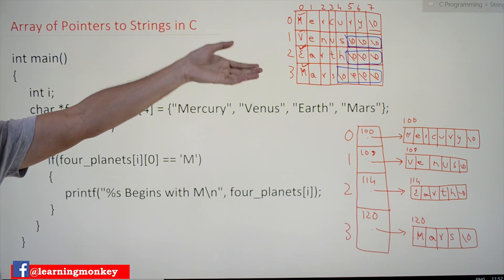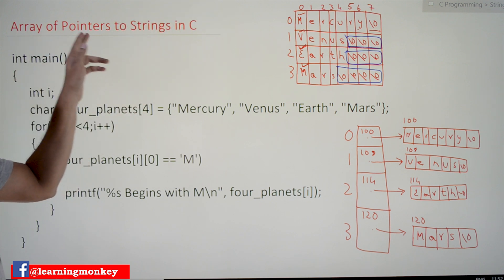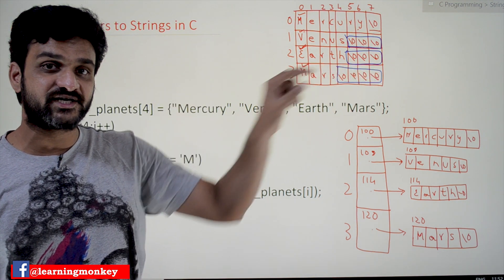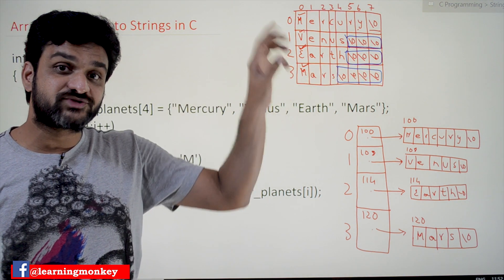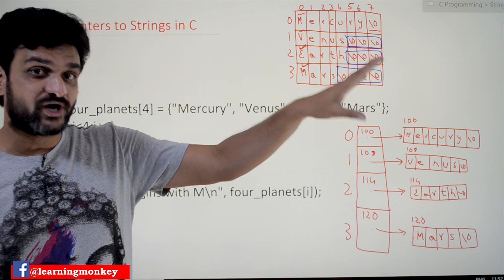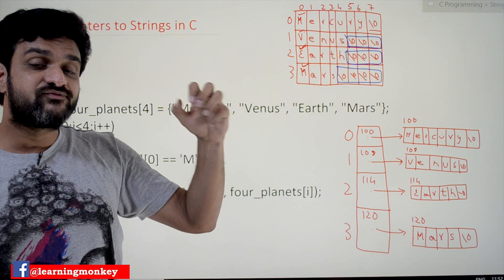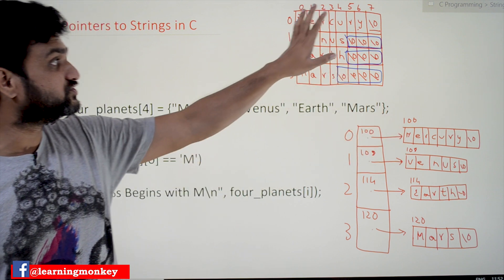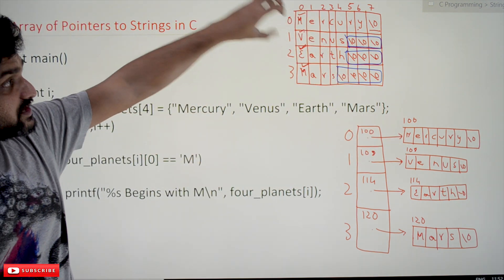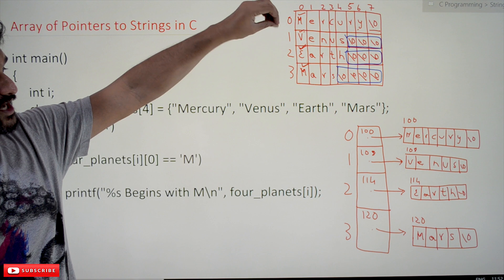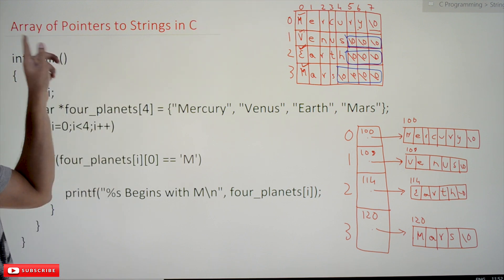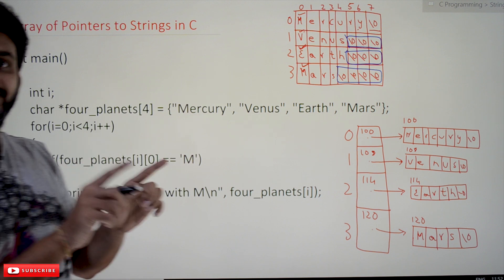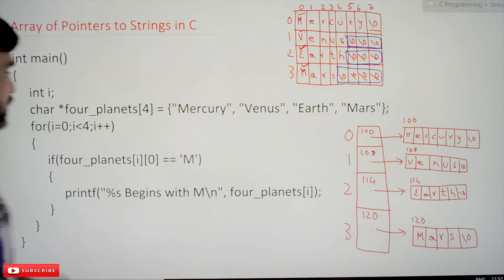In order to declare the same concept of an array of strings, we can use another method called array of pointers to strings. The only difference is that a pointer to a string is going to be a constant — we cannot modify it. But if we just need to access the values, we can use this method of declaring strings.